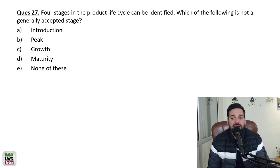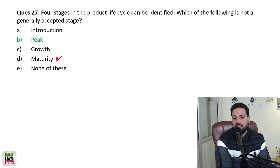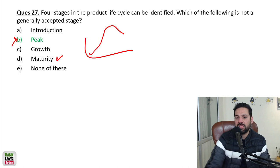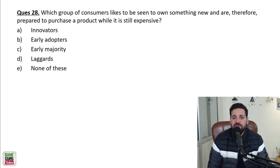Four stages in the product life cycle can be identified. Which of the following is not a generally accepted stage? Growth, introduction is there, growth, maturity, decline is there, but peak is not there. So peak is not there. Maturity hota hai, peak nahi hota hai. That stage, the peak stage is known as maturity. Peak is not a stage, so peak is wrong.